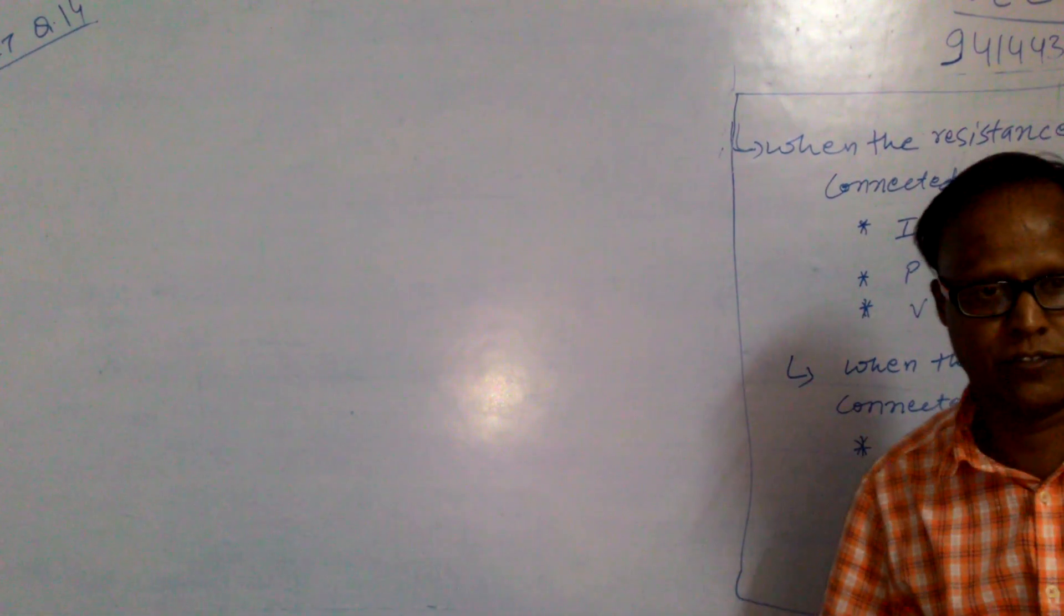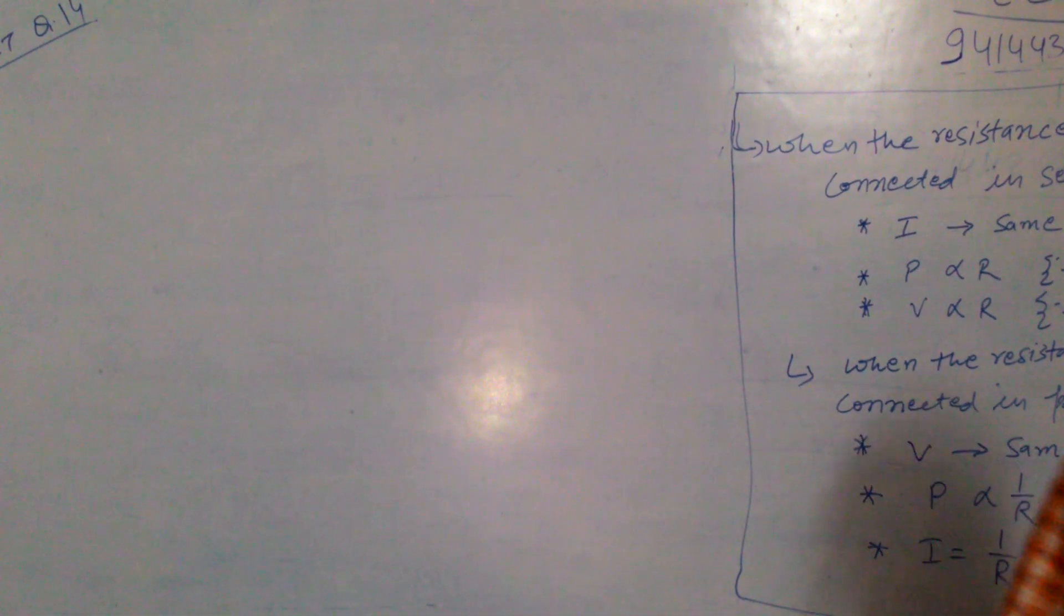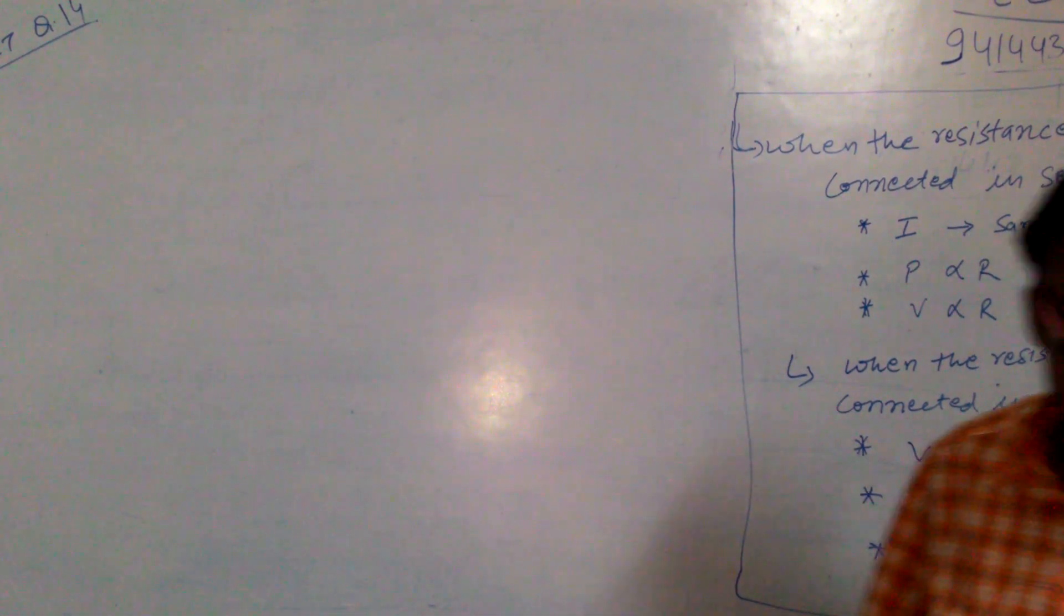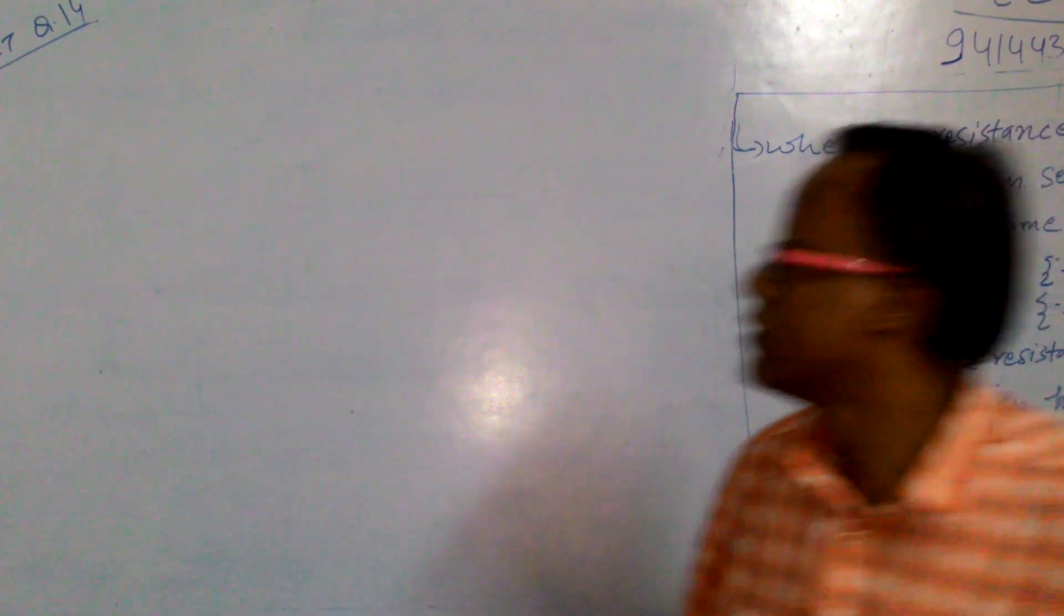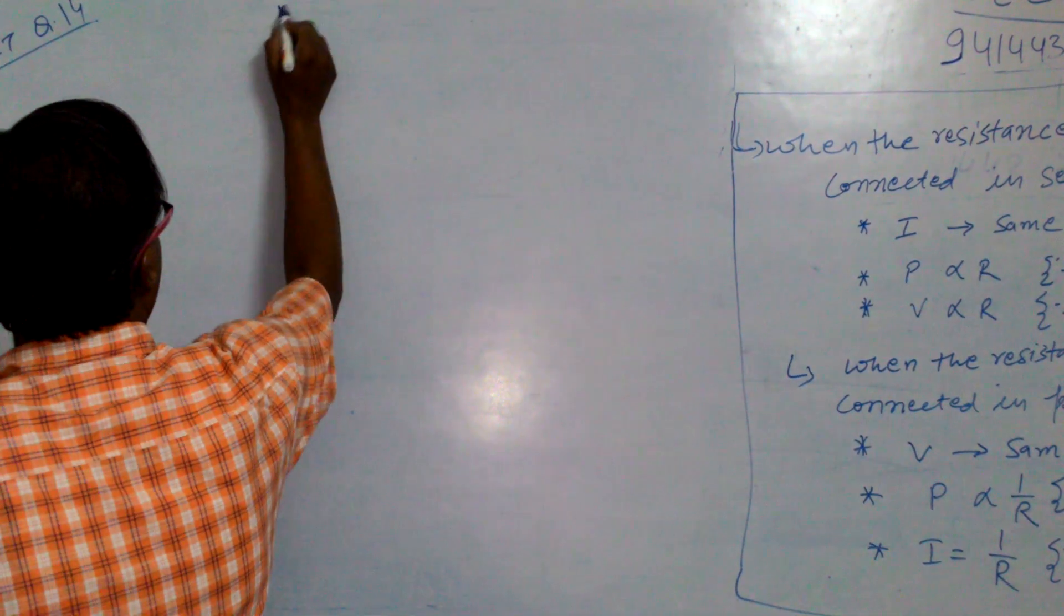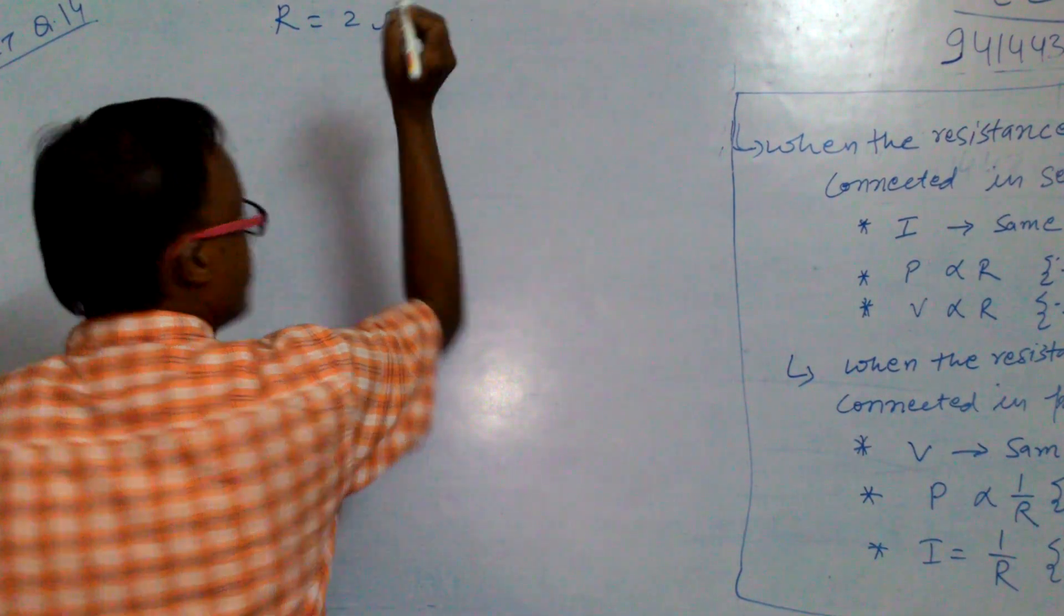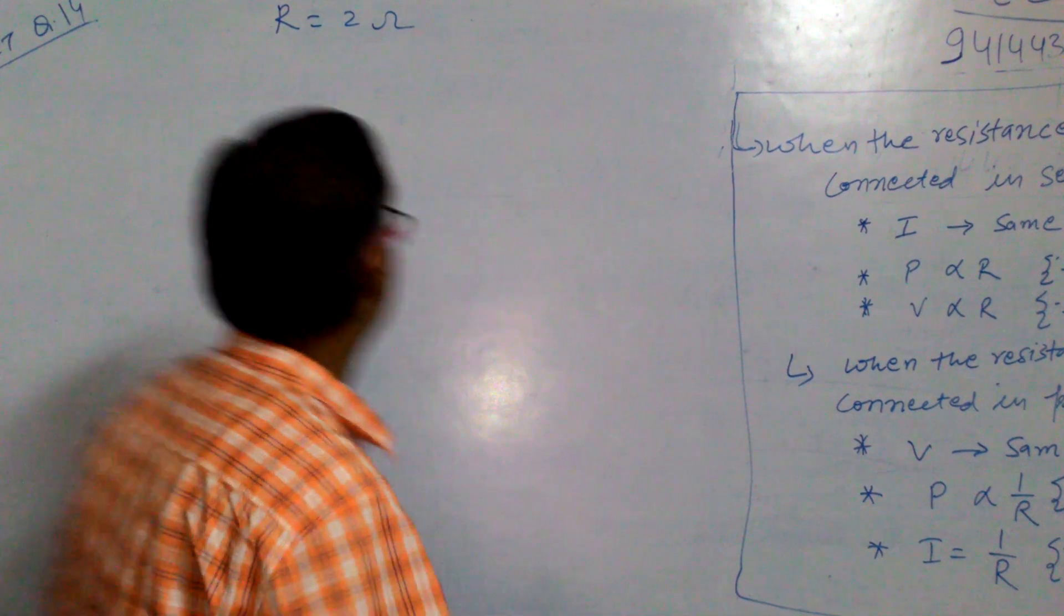Compare the power used in 2 ohm resistor in each of the following circuits. First, a 6 volt battery. The resistor is given 2 ohm. Number 1.